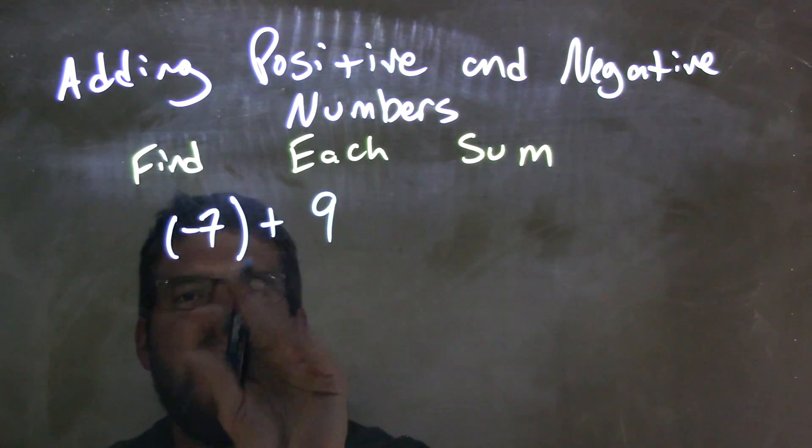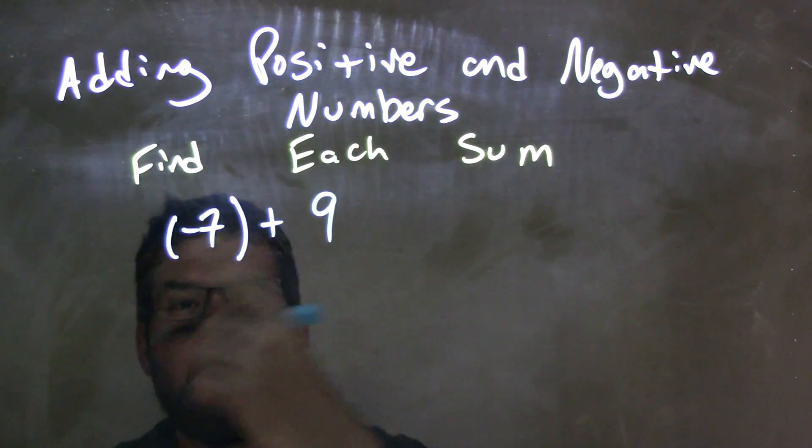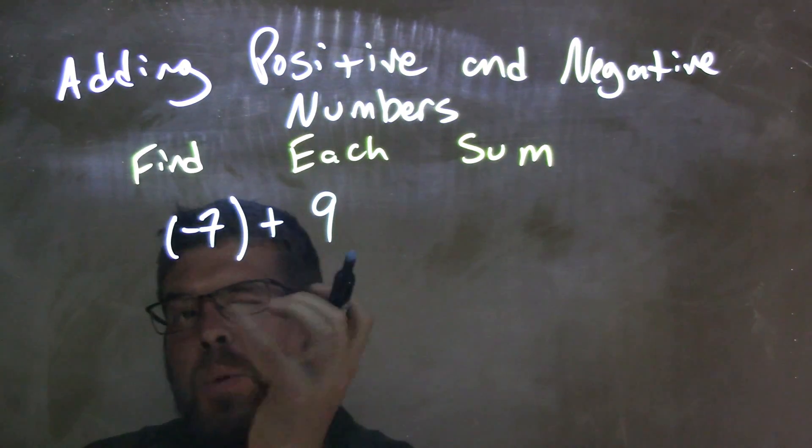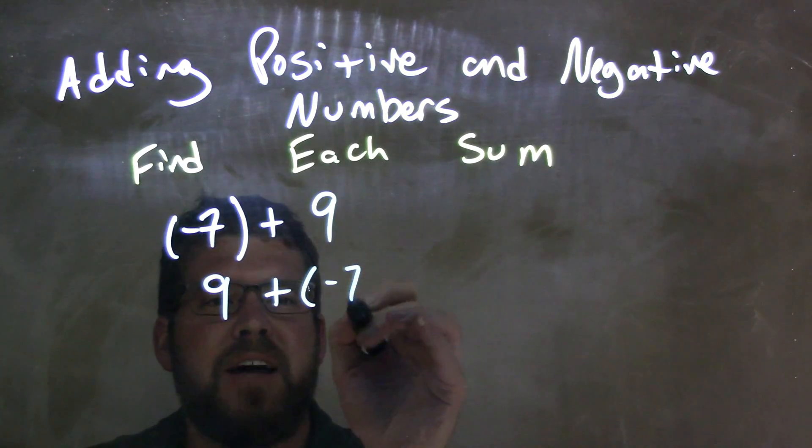Take this negative 7 out of 9, what's the, almost the difference between them. Now I like to actually flip them, so I like to switch these around because it's addition, I can move them around, so I have 9 plus a negative 7.